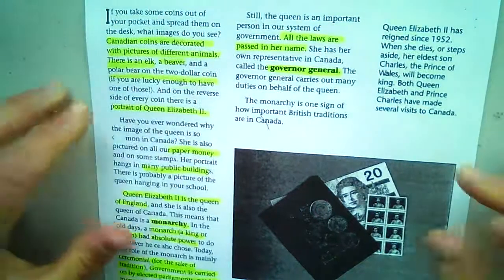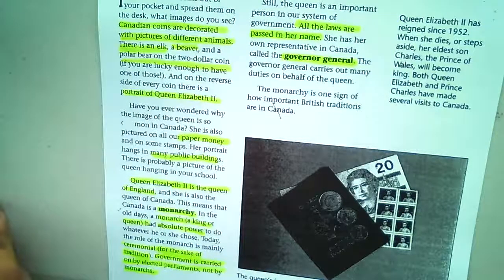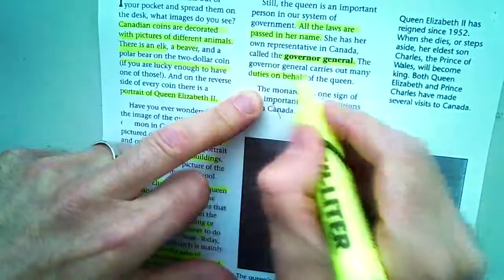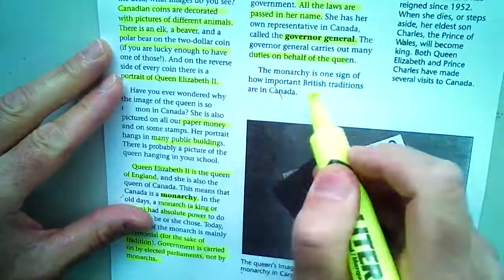The queen has her own representative in Canada called the Governor General. We did a whole article on her last year — it's quite a big deal to be a Governor General. You act as the go-between, visiting the queen and bringing information back and forth. It's a very prestigious job with a lot of travel. The Governor General carries out many duties on behalf of the queen so she doesn't have to come herself. The monarchy is one sign of how important British traditions are in Canada.